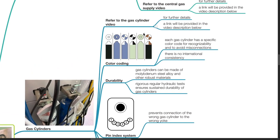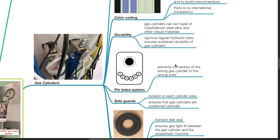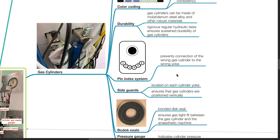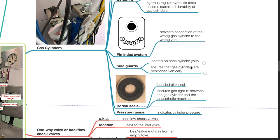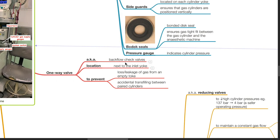Gas cylinders. Color coding is present for easy recognizability and to avoid misconnections. There is no international consistency with the color coding. Gas cylinders are very durable; they are made of molybdenum steel alloy and other robust materials. Rigorous regular hydraulic tests ensure sustained durability. Pin index system prevents connection of the wrong gas cylinder to the wrong yoke. Side guards on each cylinder yoke ensure that gas cylinders are positioned vertically. Bodock seals are bonded disc seals ensuring a gas tight fit between the gas cylinder and the anesthetic machine. Pressure gauge indicates the cylinder pressure. One-way valves, also known as backflow check valves, are located next to the inlet yoke, preventing loss or leakage of gas from an empty yoke and accidental transfilling between paired cylinders.